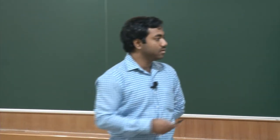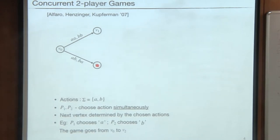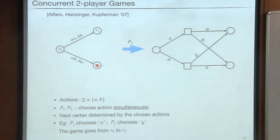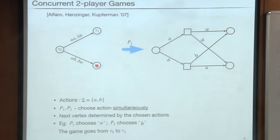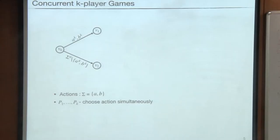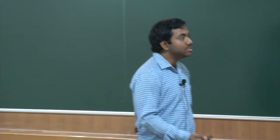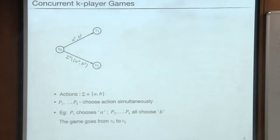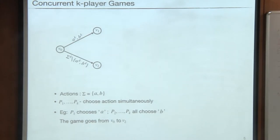If we want to find player 1's strategy in concurrent games, it is well known that we can convert this to a turn-based game where a circle vertex corresponds to player 1's vertex, and player 1 has a winning strategy in the concurrent game if and only if the circle player has a winning strategy in the turn-based game. This generalizes to K-player concurrent games where transitions have length-K words and there are K players who choose actions simultaneously. For example, if player 1 chooses A and the rest choose B, since AB^(K-1) is in the transition, the game goes from V0 to V2.